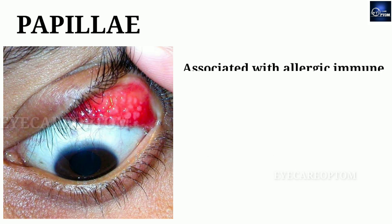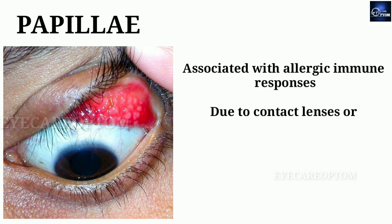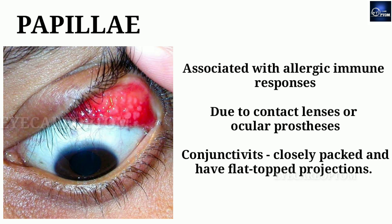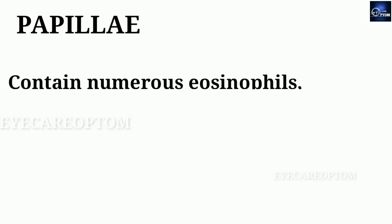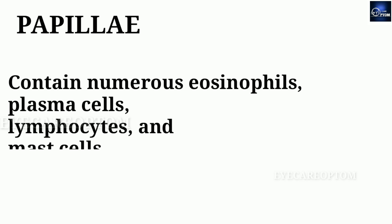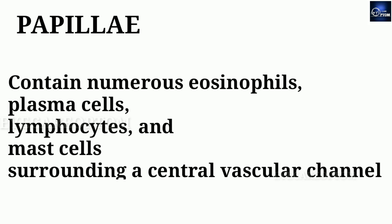Most commonly, they are associated with allergic immune response. They can occur due to foreign bodies such as contact lenses or ocular processes. In conjunctivitis, they are closely packed and they have a flat top and projection. They can contain numerous eosinophils, plasma cells, lymphocytes, and mast cells surrounding their central vascular channel.